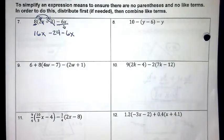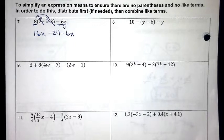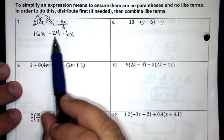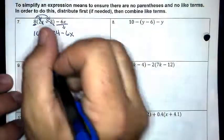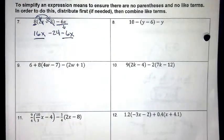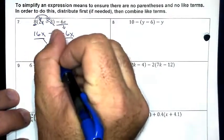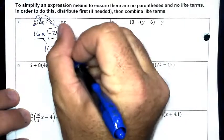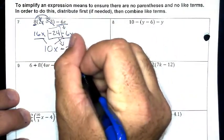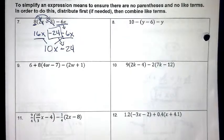Have I now eliminated parentheses? Yes — step one is done. Step two: combine like terms. Do I have any like terms in my new expression? Yes — 16x and negative 6. 16 minus 6 gives 10, so I have 10x. Does anything combine with the negative 24? No — bring it down. Final answer: 10x minus 24.